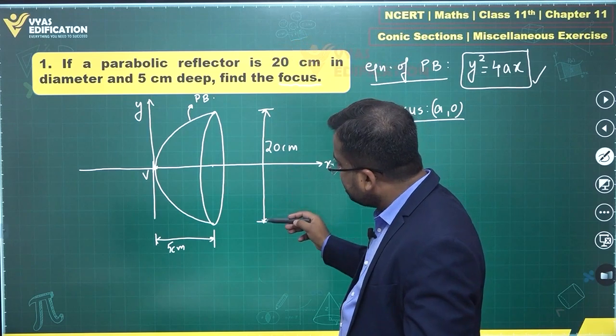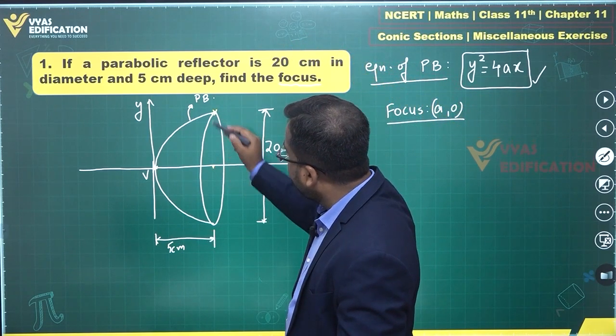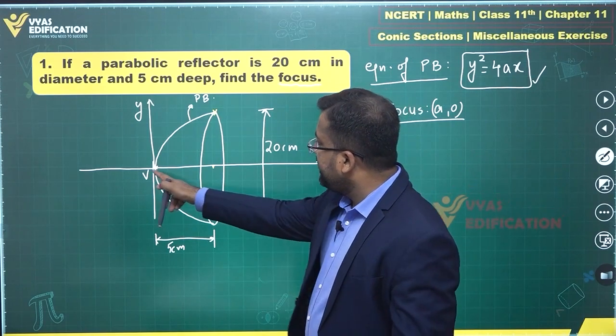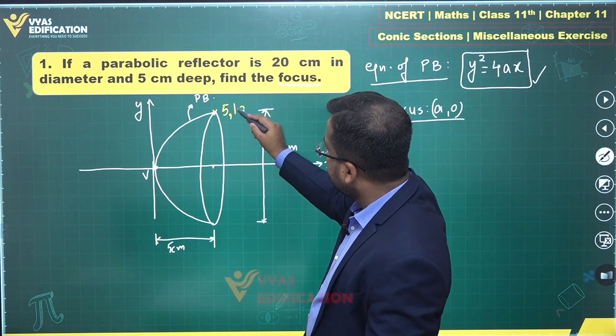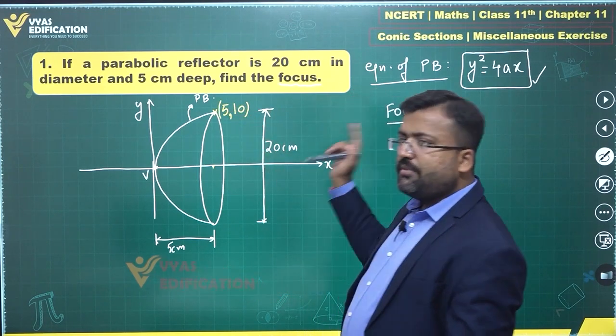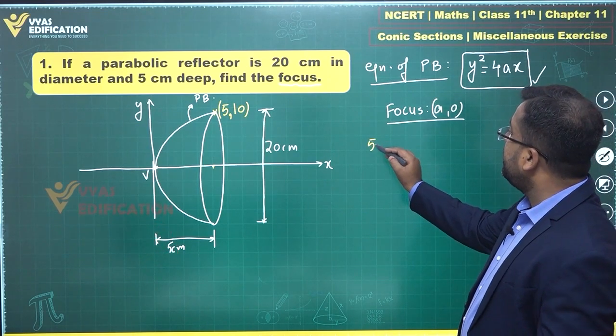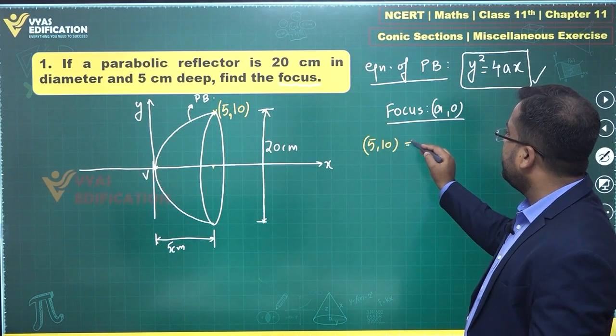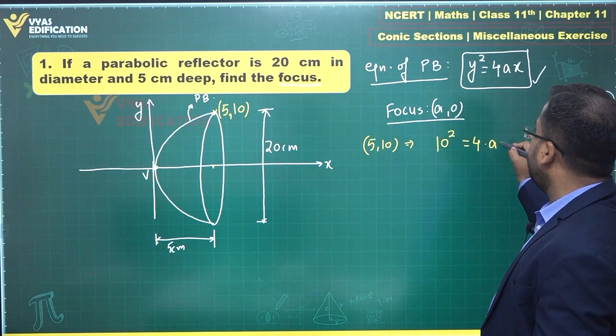So, this depth is 5 centimeter, this diameter is 20 centimeter means this particular point over here on the parabola will have x-coordinate as 5, y-coordinate as this distance which is half of this which is 10. So, this parabola passes through this point (5, 10).